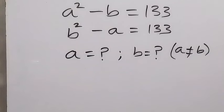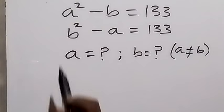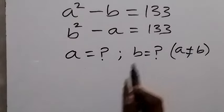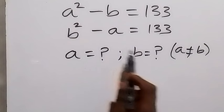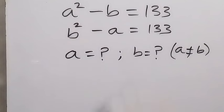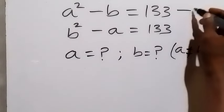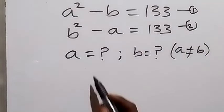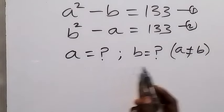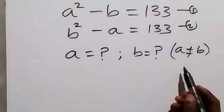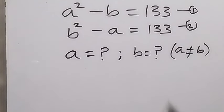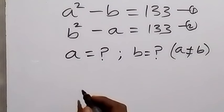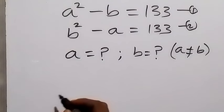Hello, you are welcome. How to solve this nice olympiad problem: a squared minus b equals 133, b squared minus a equals 133. Let's call this equation 1 and this equation 2. We are finding a and b. We should note that a is not equal to b.